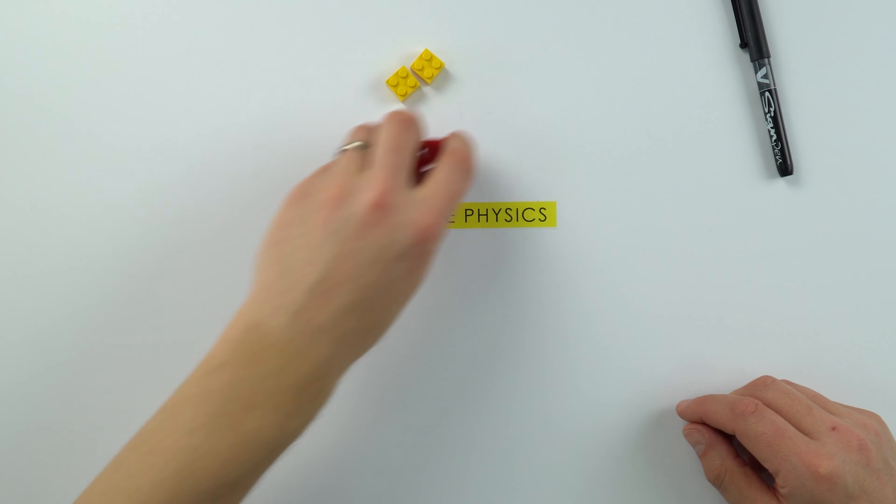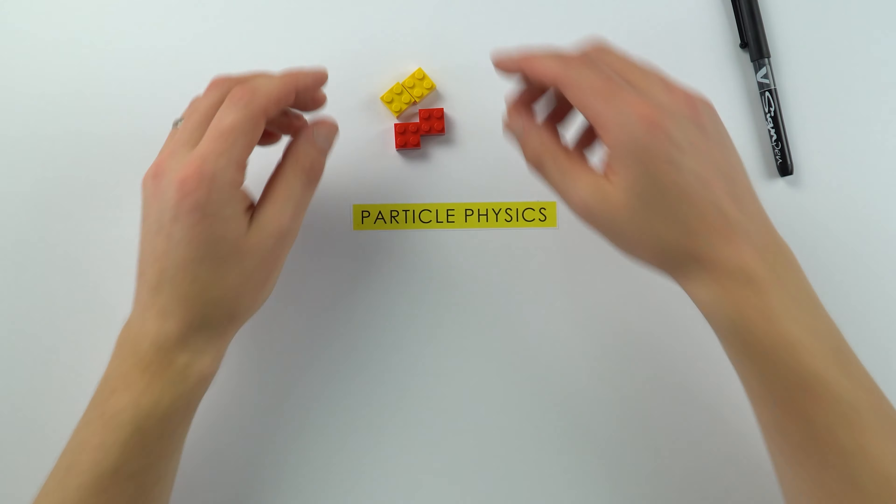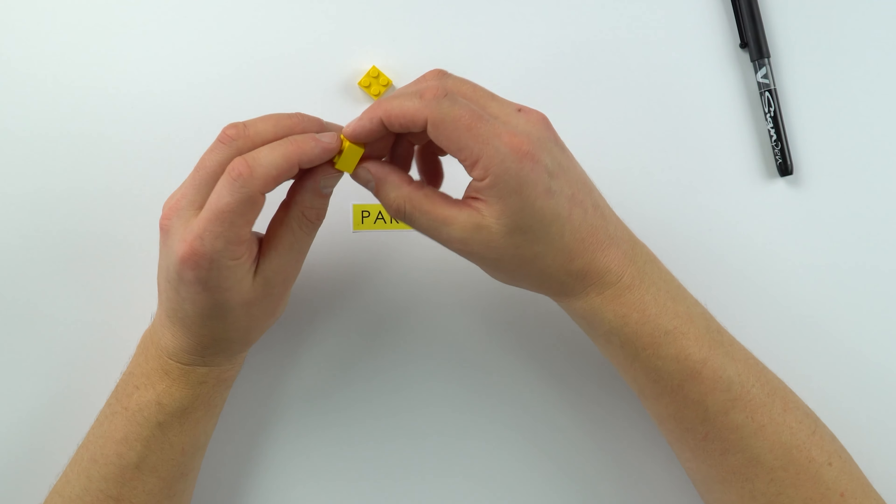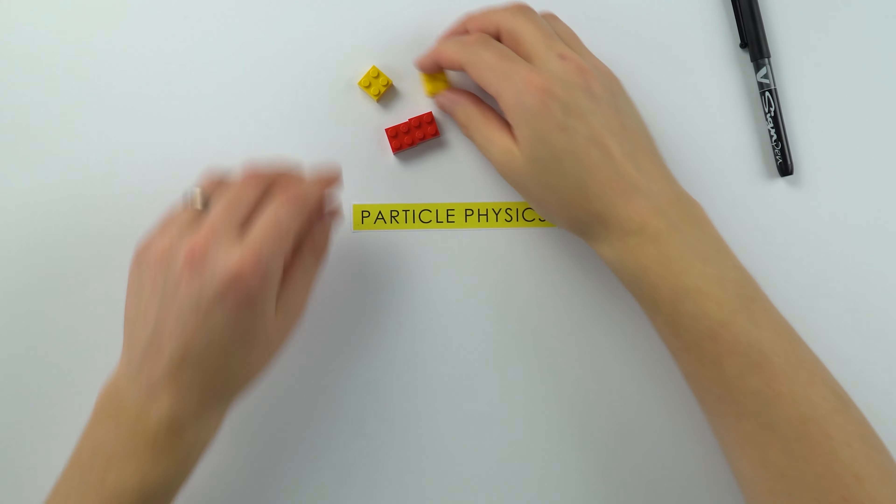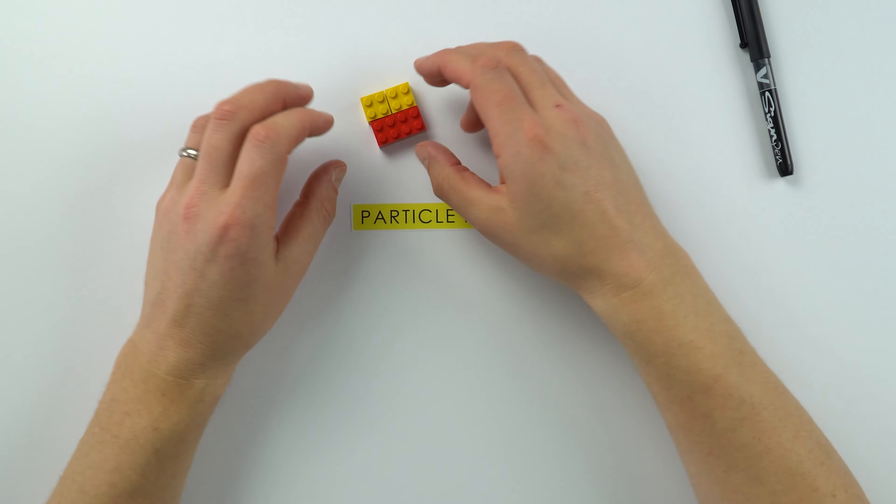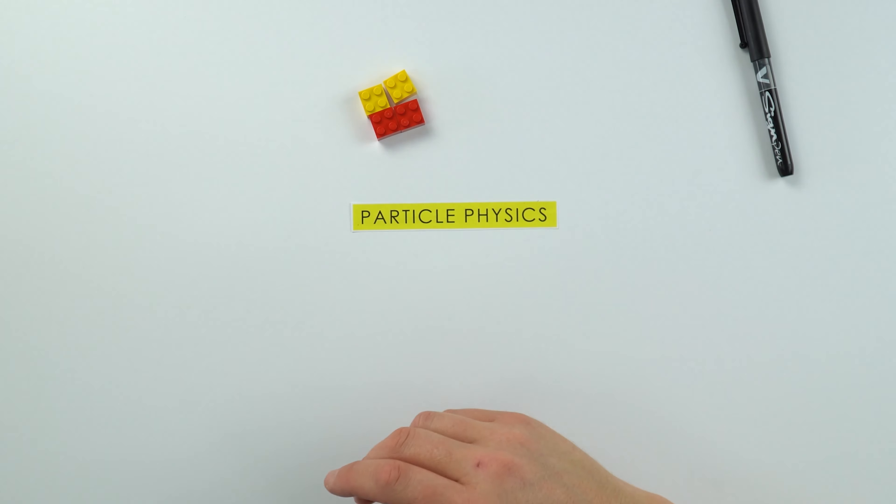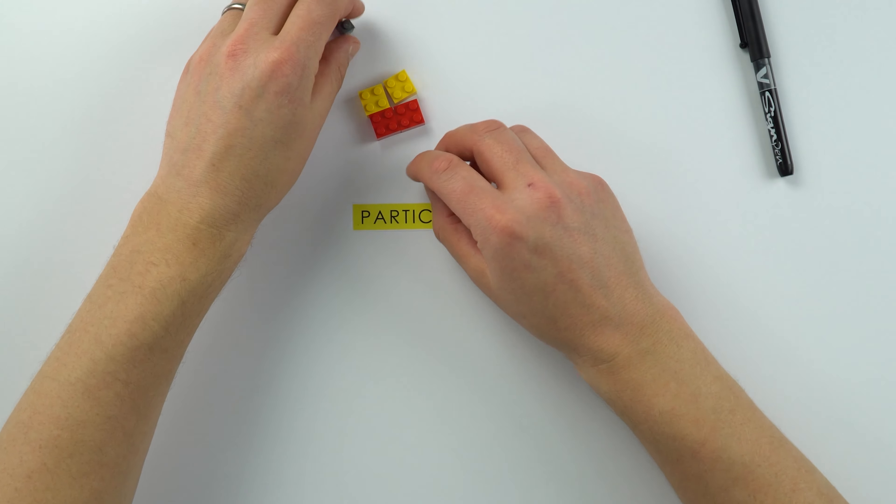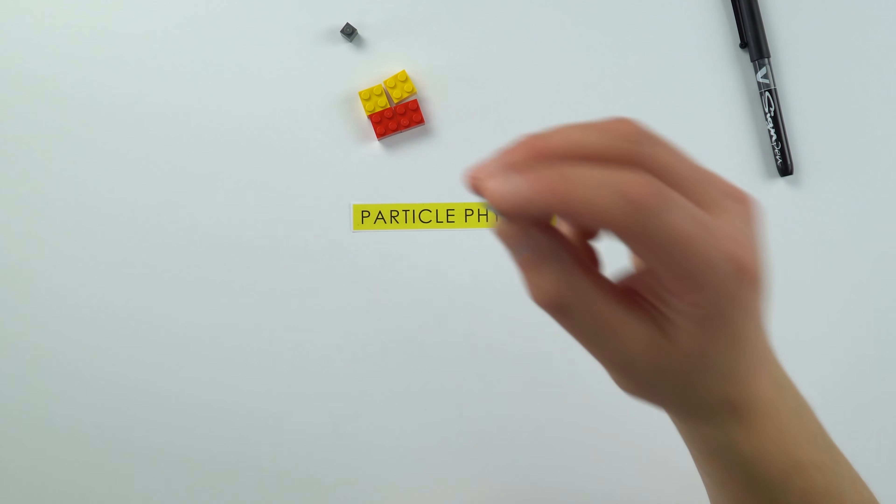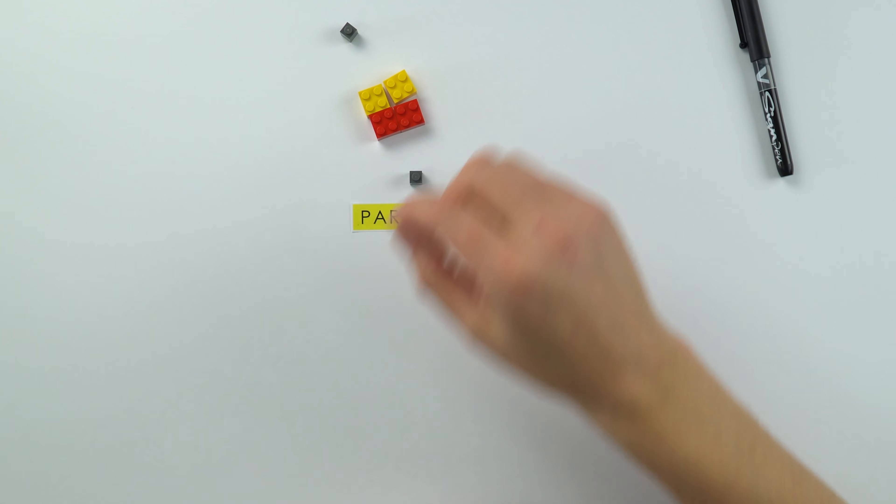First of all we've got the atom, and inside the atom we have this dense nucleus made out of protons and neutrons. For the purpose of this video I'm using yellow Lego bits to be my protons. There's no reason, it's just a way to model it. So we've got protons and neutrons in this dense nucleus, and surrounding that we have shells of electrons, which I'm using these one by one grey pieces of Lego. So what do you know from GCSE?